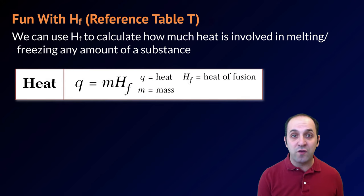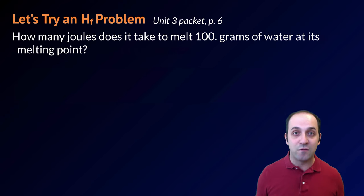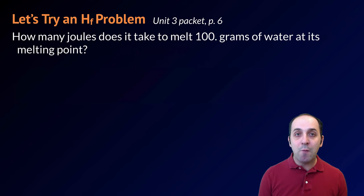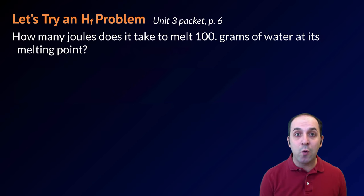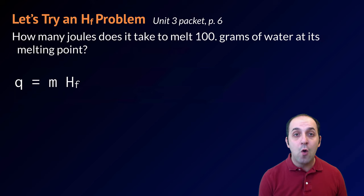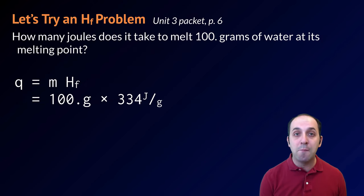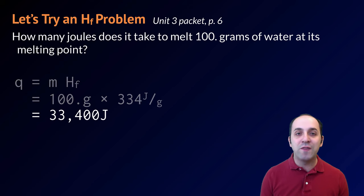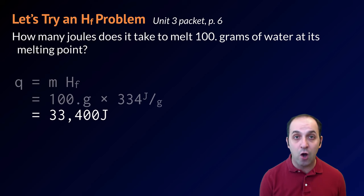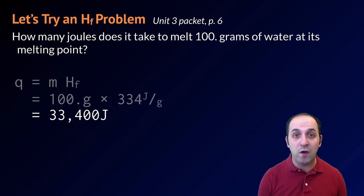Let's use this equation to see how it works. Here's a question from page 6 of your unit 3 packet: how many joules does it take to melt 100 grams of water at its melting point? Pause the video and try to solve it. Because we are melting this substance, we use Q = mHF. The mass is 100 grams and the heat of fusion for water is 334 joules per gram. Multiplying these out gives us 33,400 joules of energy needed to melt 100 grams of water at its melting point.